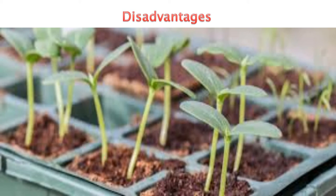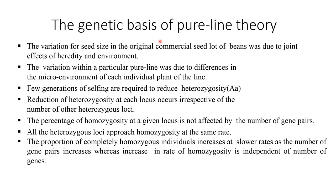No further improvement is possible beyond isolation of the best available genotype in the population. Regarding the genetic basis of pure line theory: the variation in seed size in the original commercial seed lot was due to the effects of heredity and environment. The variation within a particular pure line was due to differences in the micro-environment of individual plants of the line.